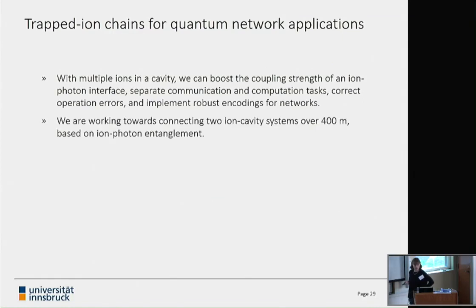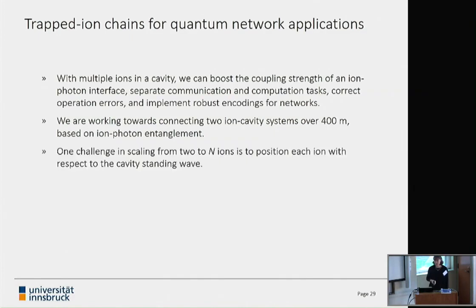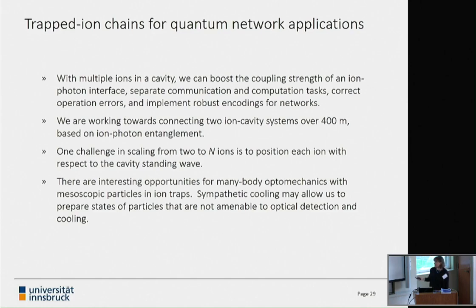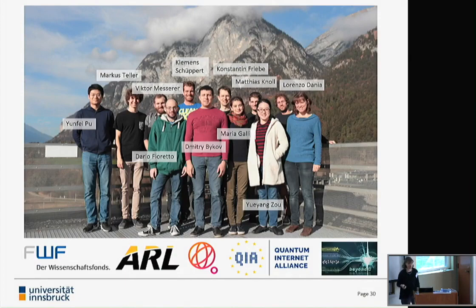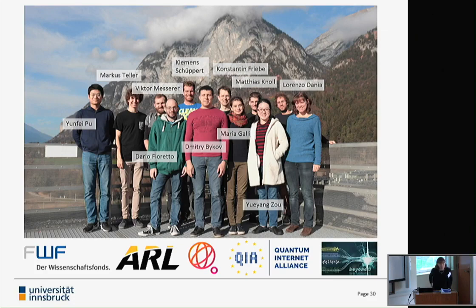To wrap up, what I wanted to emphasize was the many different applications for multiple ions for quantum networks, and the work that we're doing in Innsbruck on connecting two cavity systems, one in Ben Lanyon's team, one in my own, over a 400-meter fiber length. One of the many challenges in scaling up the number of ions is positioning. More broadly, the reason we focused on just a few ions is to understand what we're doing and to get the level of control that we know we have with single ion experiments before we start adding more particles and complexity. Finally, I made some arguments about these nanoparticle systems. Let me pause and thank you.